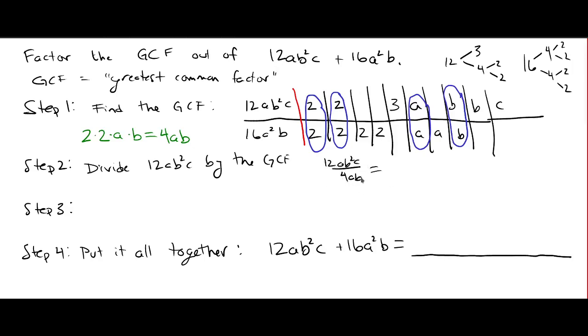So 12 divided by 4 is 3. The a's cancel. And one of the b's is going to cancel. So we're going to have 1b left, because there's 2 in the top, and a c. All right, so 3bc, that's what we get when we divide the first term by the GCF. If you multiply 3bc times 4ab, you get 12ab squared c.